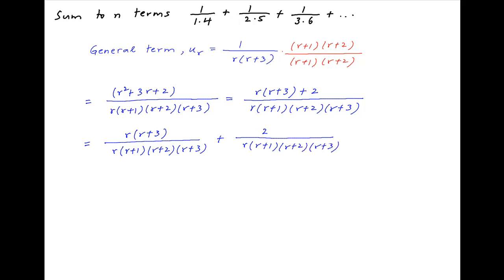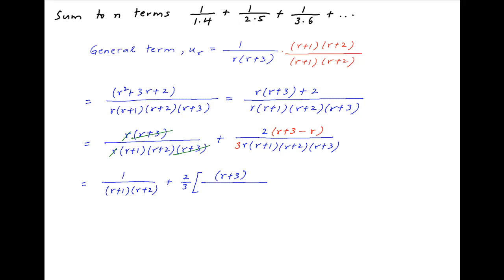r times (r + 3) cancels across the numerator and denominator of the first term. In the second term, we multiply with the expression (r + 3) minus r, which equals 3, and therefore divide by 3 as well. Therefore, u_r can be written as 1 upon (r + 1)(r + 2) plus 2 upon 3 times (r + 3) divided by r(r + 1)(r + 2)(r + 3).